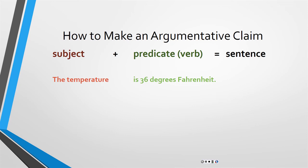We're going to start with some basic building blocks of what constitutes persuasion, what makes it different from information. I'm going to start by going to grammar and syntax. Every sentence in the English language has what's called a subject and a predicate. The subject is usually the noun of the sentence — the person, place, or thing that's going to do something. The predicate is what that thing is doing. For example: the subject is 'the temperature,' and the predicate is 'is 36 degrees Fahrenheit.' Almost every sentence will have both of these things.